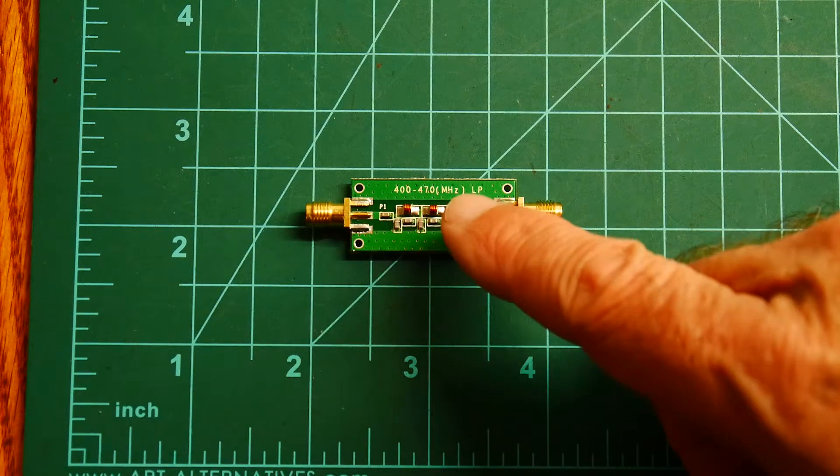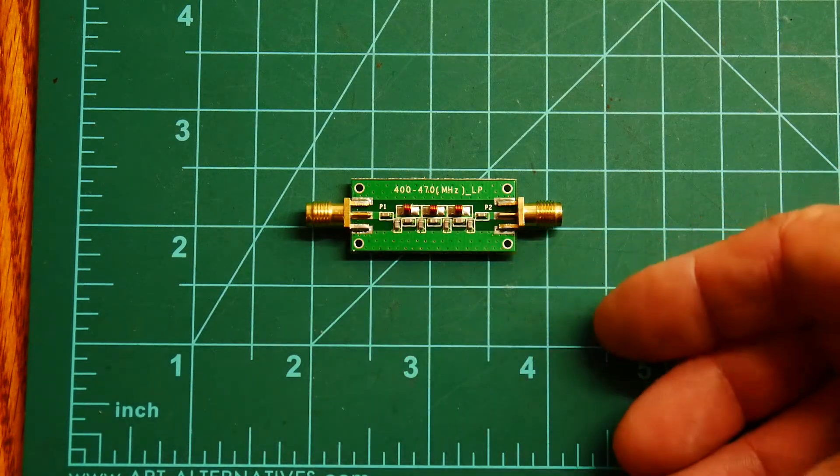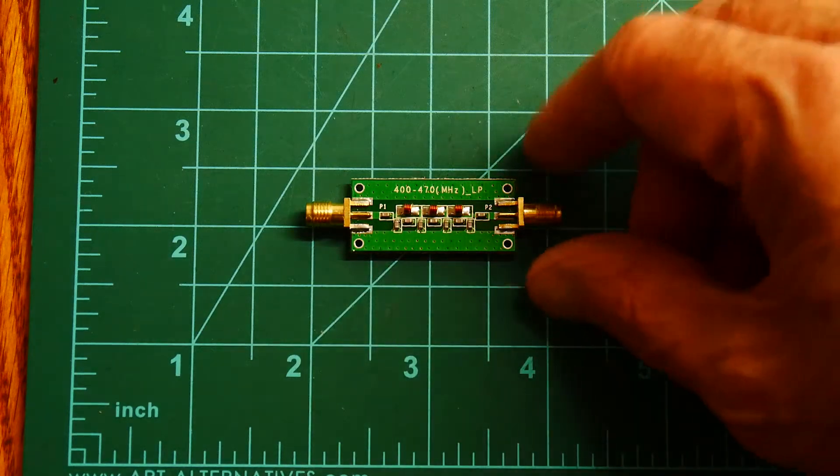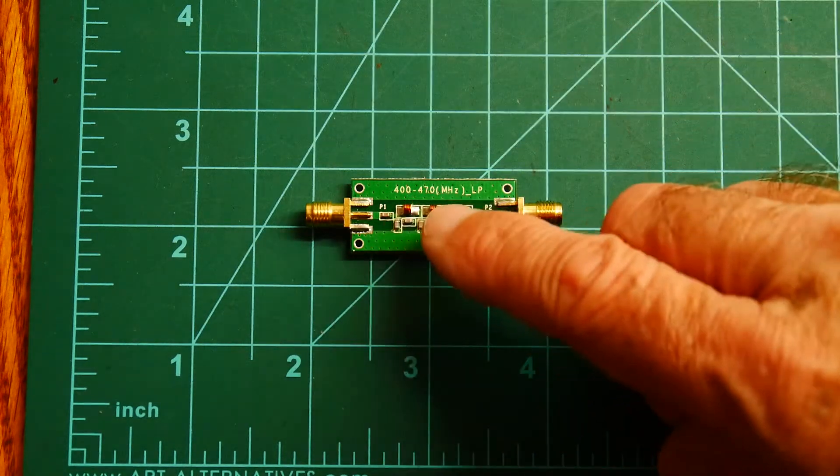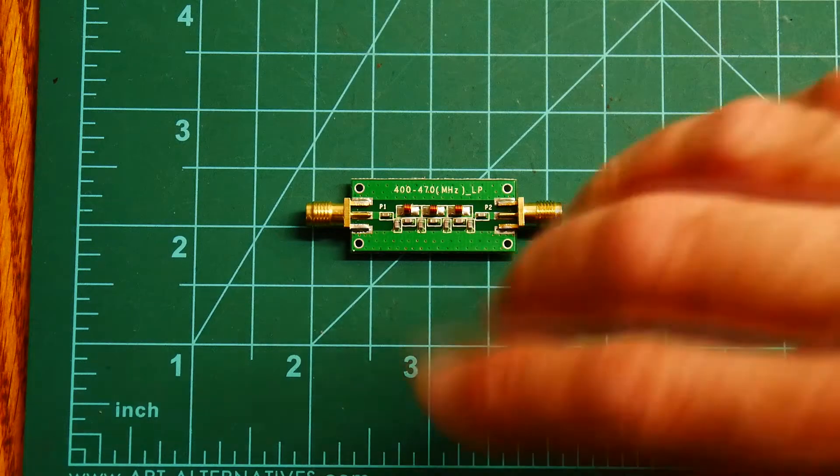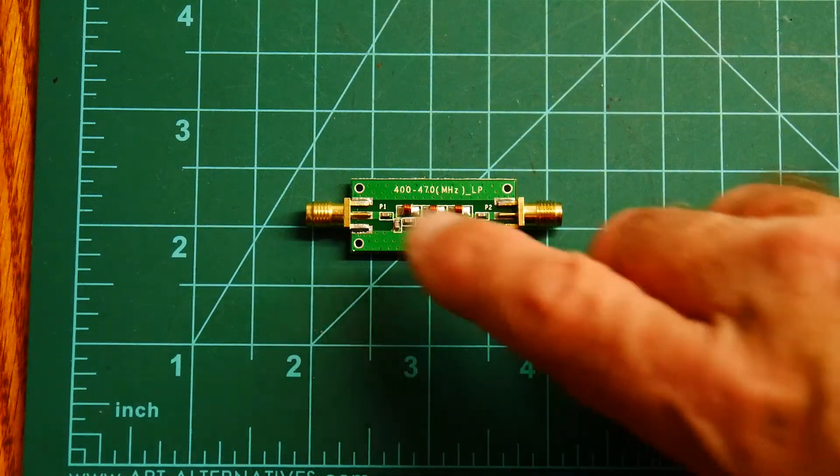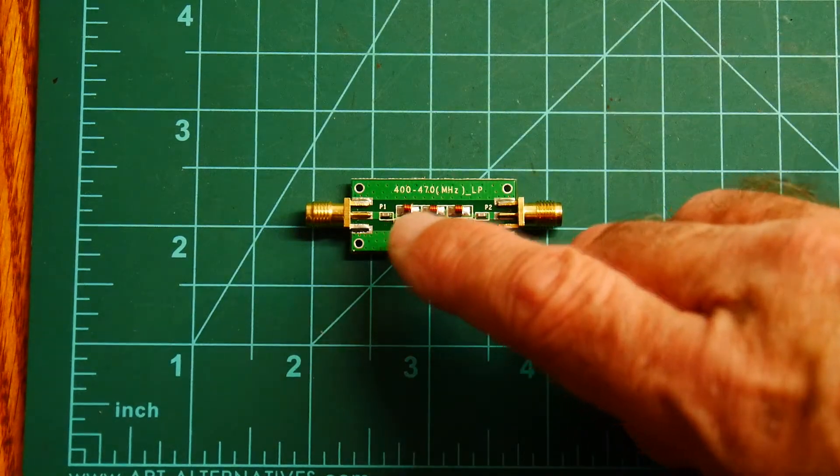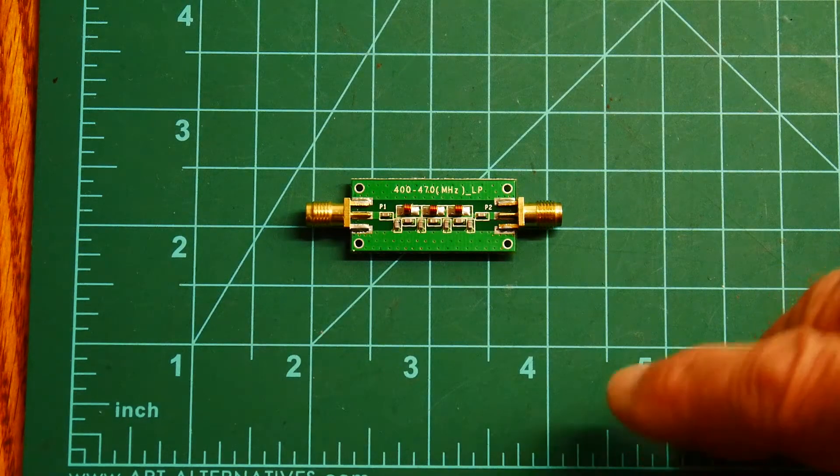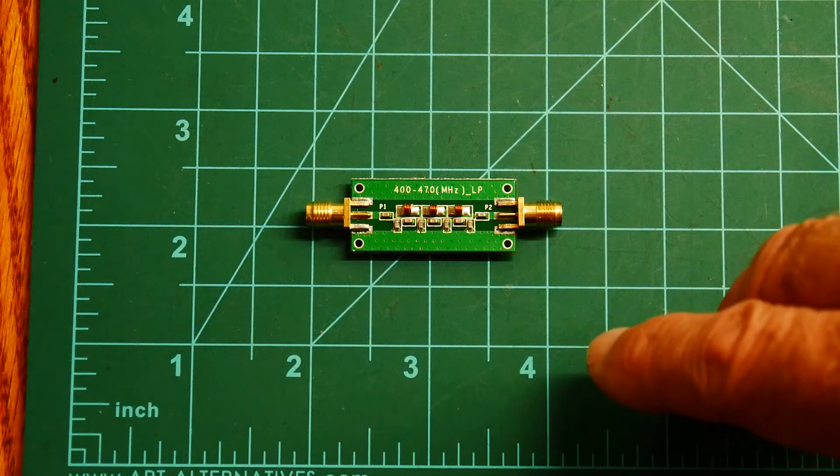Usually when they give a range that's for a bandpass, but this is definitely a low-pass filter. So I guess the component selection is pretty sloppy, so the cutoff is going to be somewhere between 400 and 470 megahertz I guess. It seems kind of strange why they would label it that way.